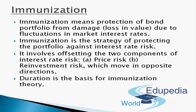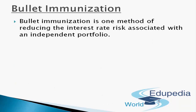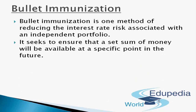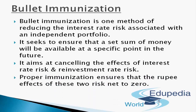That was all about immunization. Now let's move on to the subset of this topic: bullet immunization. While immunization deals with individual securities, bullet immunization is a method that helps in reducing the interest rate risk associated with individual portfolios. It seeks to ensure that a certain set of money will be available at a specific point in the future. It aims at cancelling the effects of interest rate risk and reinvestment rate risk. Proper immunization ensures that the rupee effects of these two risks net to zero.